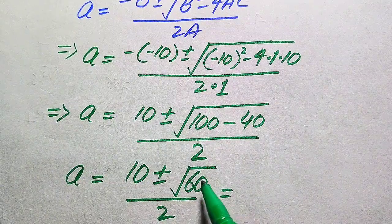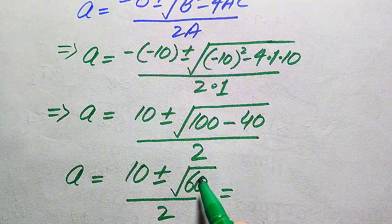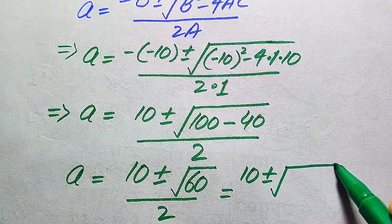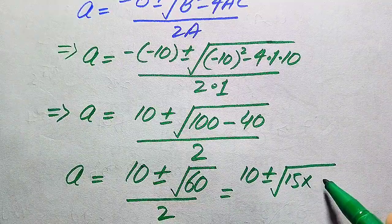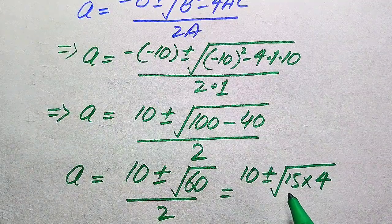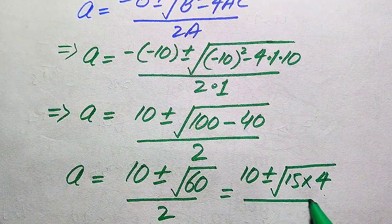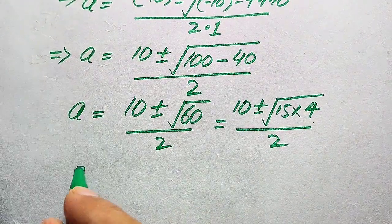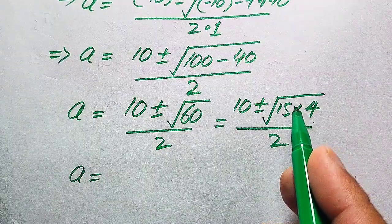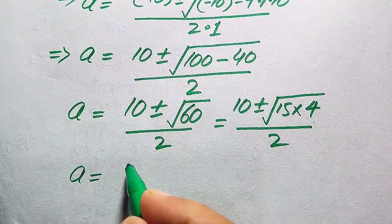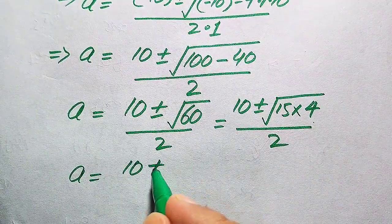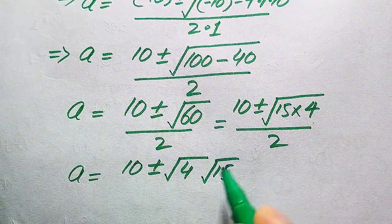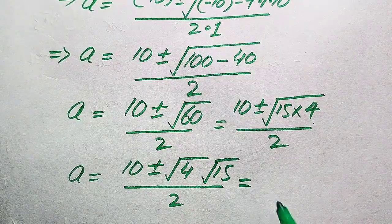We focus inside the square root sign. The value is 60, and we write 60 as 15 times 4, since 15 times 4 equals 60. Divided by 2. We then break the square root sign separately on both values, giving us: 10 plus or minus square root of 4 times square root of 15, divided by 2.